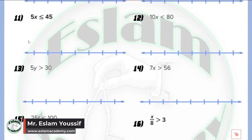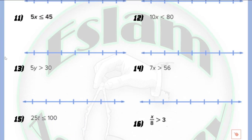In question number 11, we have 5x less than or equal to 45. 5x means 5 multiplied by x. As usual, we use the inverse operation — the inverse of multiplication is division, so we divide by 5. So x is less than or equal to 45 divided by 5, which equals 9. We write 9. Less than or equal means a closed circle, and we shade the left part.